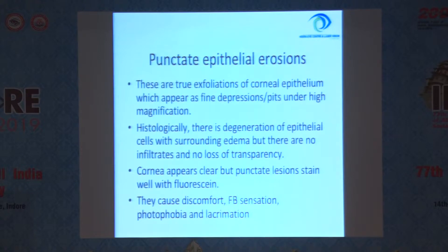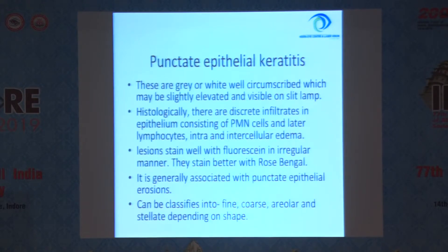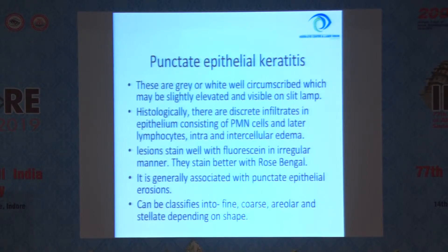They cause discomfort, foreign body sensation, photophobia and lacrimation. Punctate epithelial keratitis are grey and white well-circumscribed lesions which may be slightly elevated and visible on slit lamp. Histologically, there are discrete infiltrates in the epithelium consisting of polymorphonuclear cells and later lymphocytes with intra- and intercellular edema. Lesions stain well with fluorescein in an irregular manner and they stain better with rose bengal. They are generally associated with punctate epithelial erosions and can be classified into fine, coarse, areolar and stellate depending on the shape.